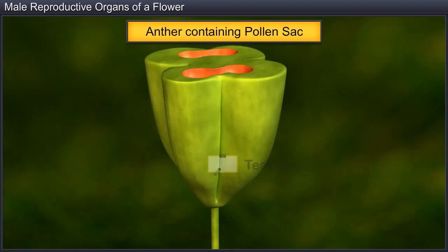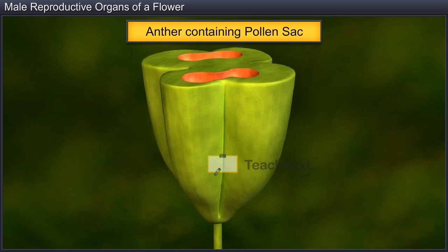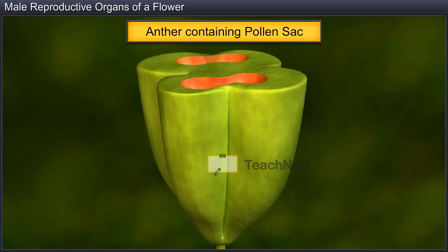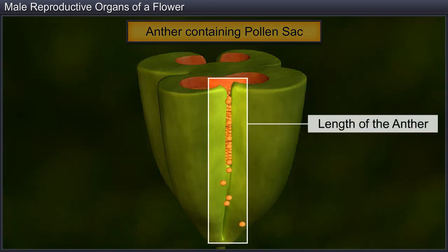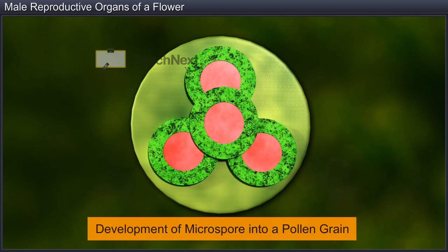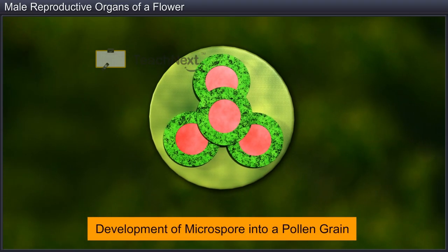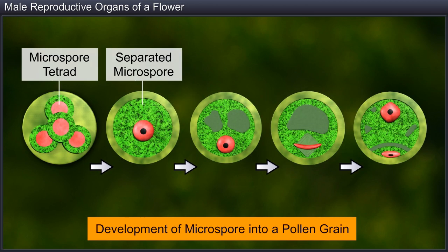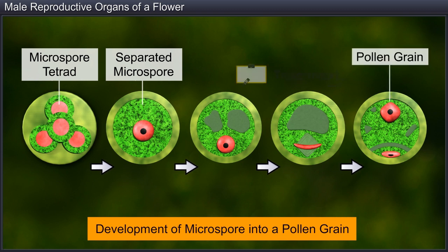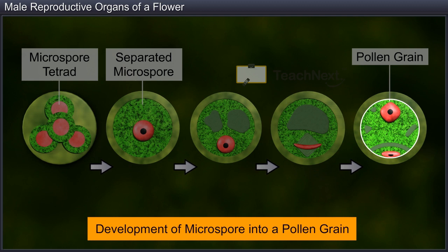As the anther begins to mature, both the microsporangium and microspores undergo changes. While the microsporangium develops into the pollen sacs that extend longitudinally through the length of the anther, the microspores separate from the tetrad and develop into pollen grains. Thus, the anther contains thousands of pollen grains, which undergo mitosis to form two unequal cells.